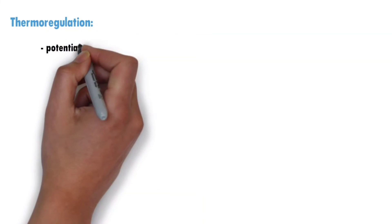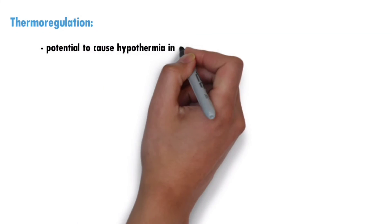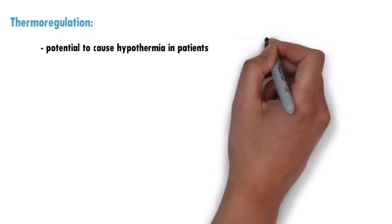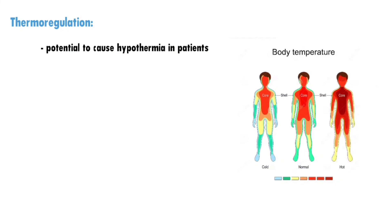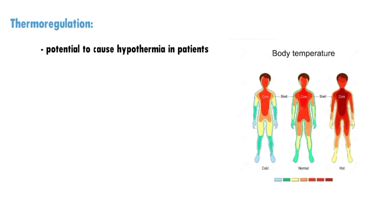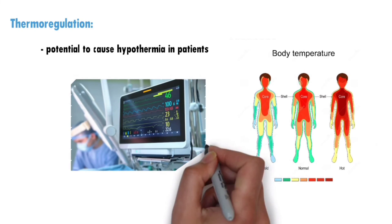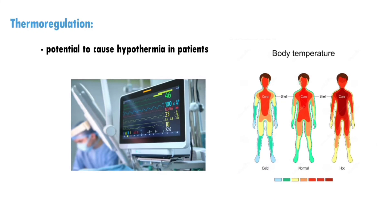Thermoregulation: Dexmedetomidine has the potential to cause hypothermia in patients. It affects the body's thermoregulatory mechanisms, leading to a decrease in core body temperature. This effect may require appropriate monitoring and active measures to maintain normothermia in clinical settings.